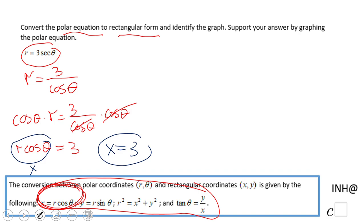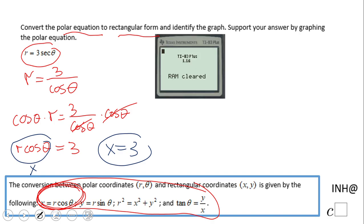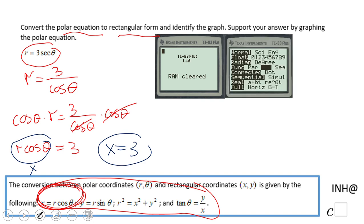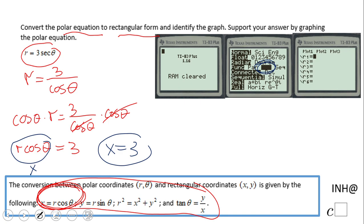Let's take a look at how to use the graphing calculator. I have here a TI-83. I would suggest you clear it, and you want to change to parametric, to polar mode, which is right here. It says POL and you can already see it.